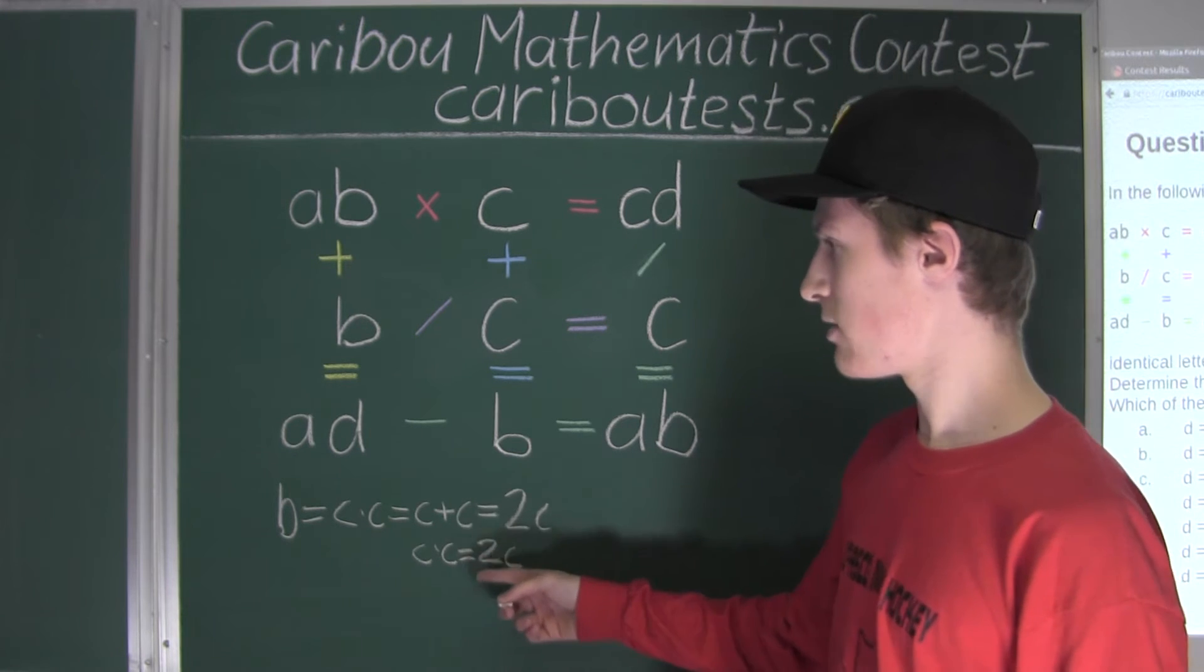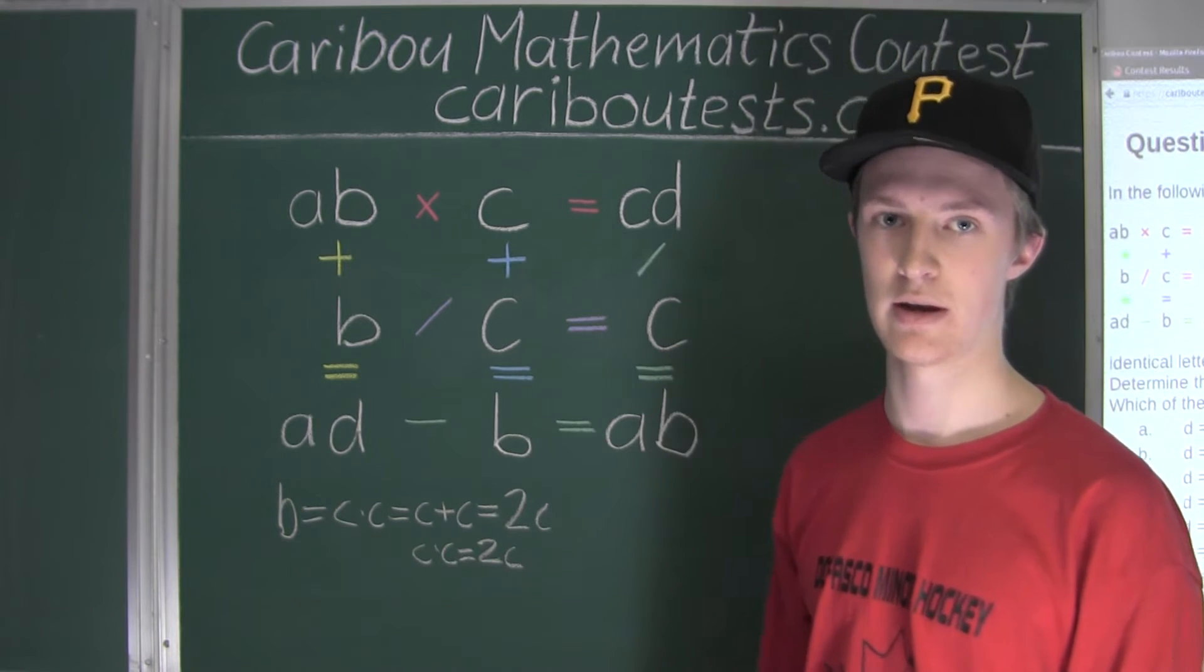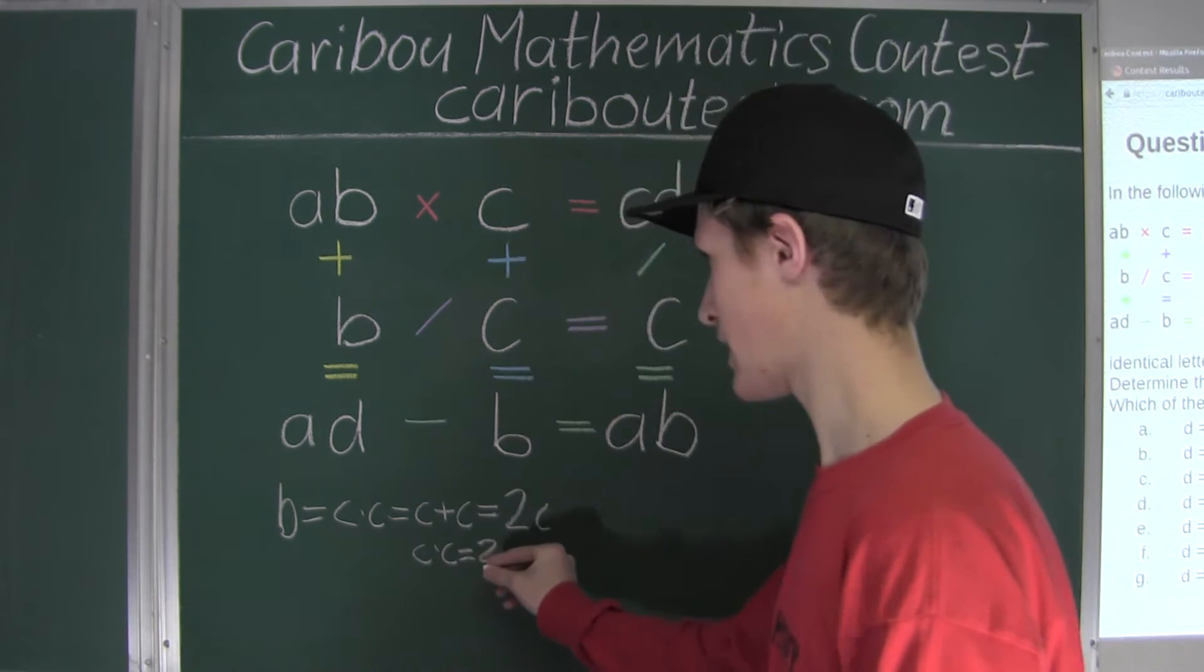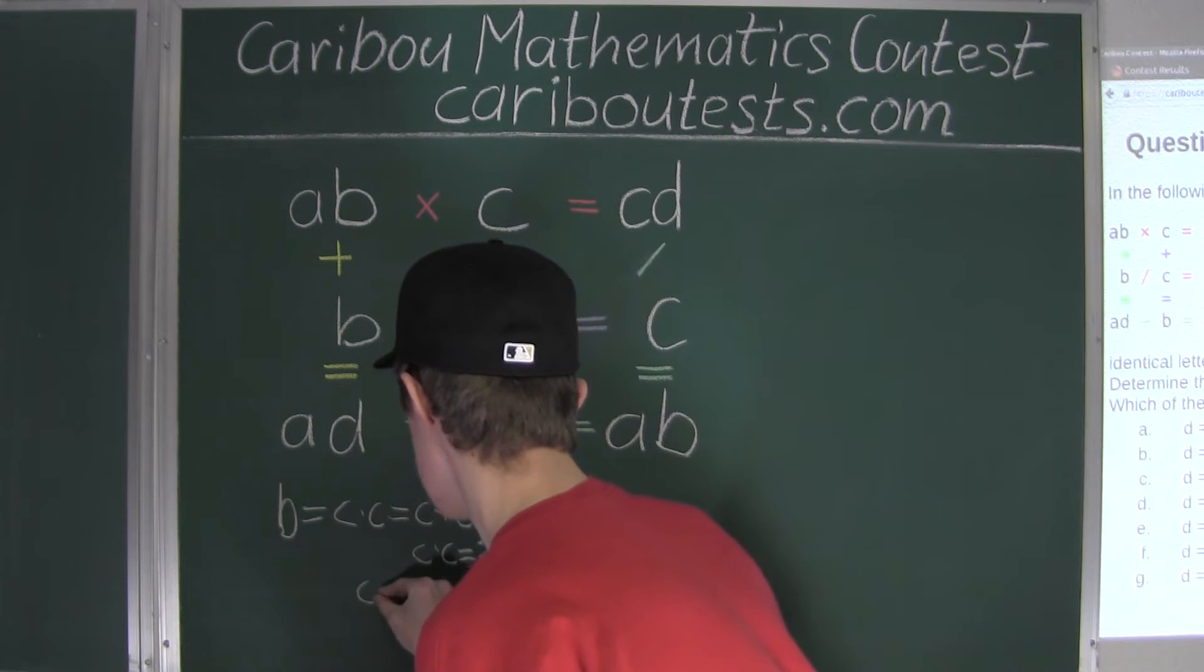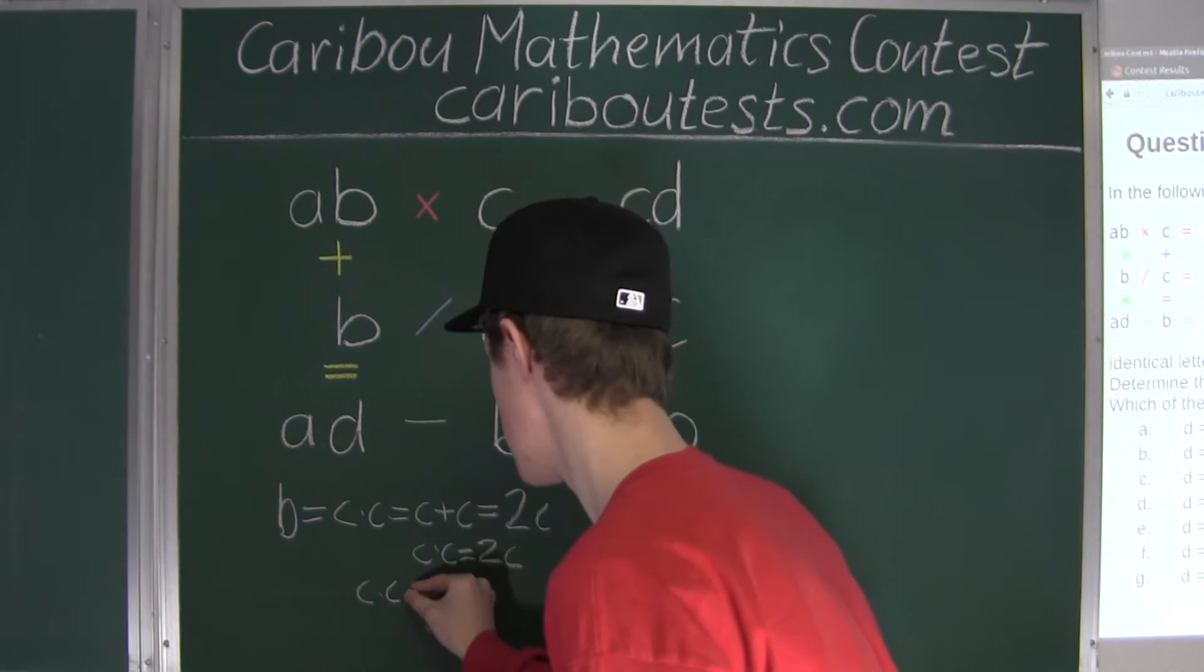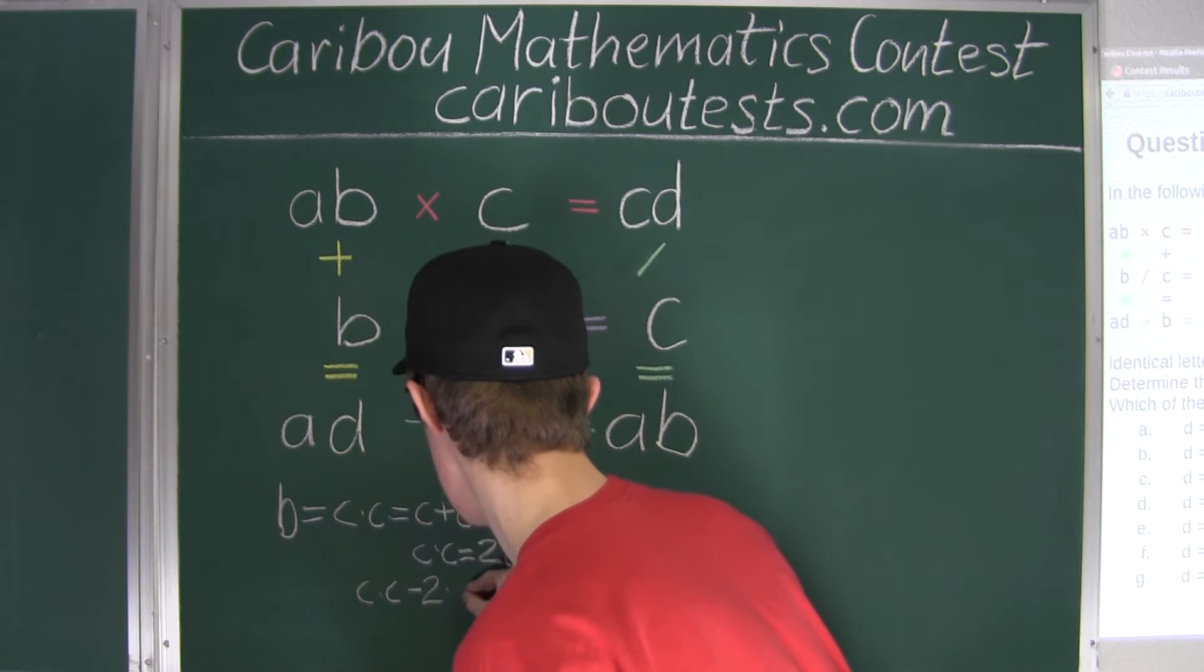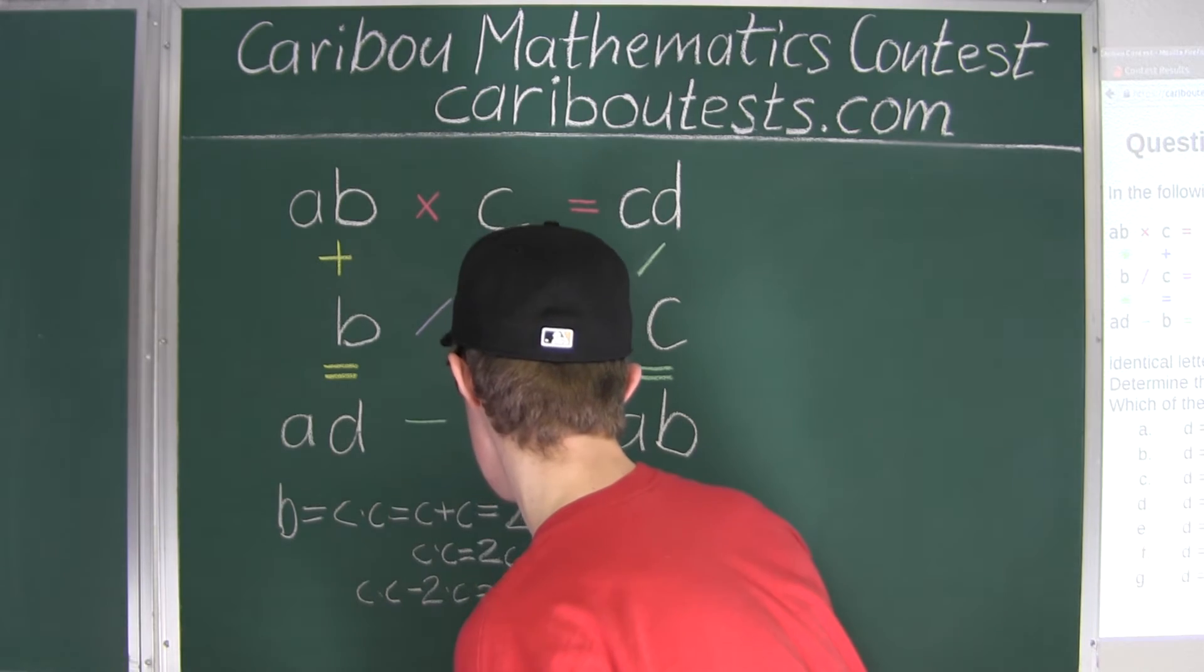Now, this, what I will be showing you, is called the distributive law, which is more for older grades, because you will learn that later. So, here we have, if we bring C times C, and then we bring the 2C on that side, then we have minus 2 times C, because we are bringing it on this side.